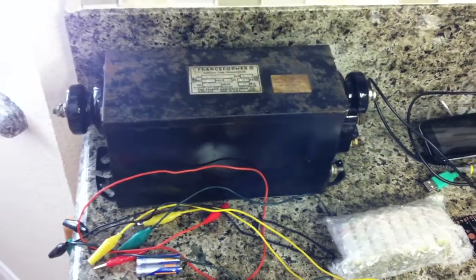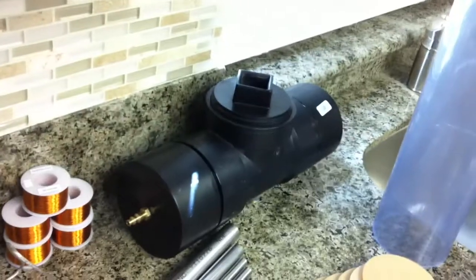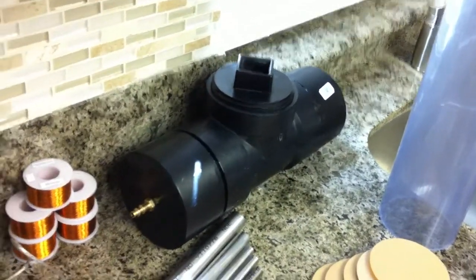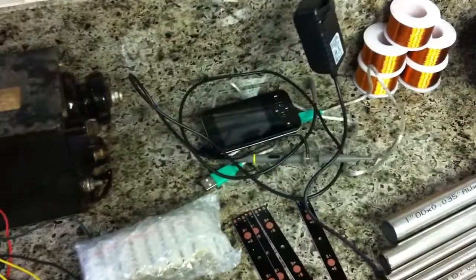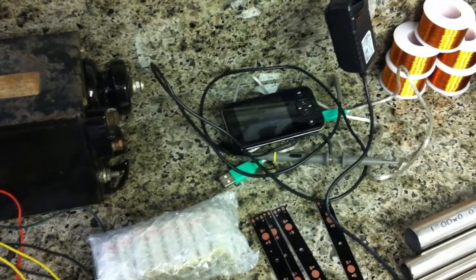I've got a neon sign transformer for the spark gap for that chamber right over there. You've seen that in my last video. And I've got an oscilloscope I purchased pretty cheap on eBay.